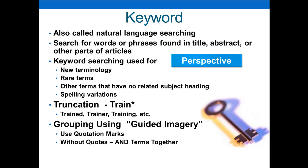Keyword searching is also useful when a term has no related subject heading — that will make more sense after watching the next video. Another reason to use keywords is when there are spelling variations. Science is a very international endeavor, and not every country, even if they speak English, spells words exactly the same. There are European spellings for 'colour,' just like there's an American spelling for 'color.' So there is a use for keyword searching; it just depends on what you're doing.